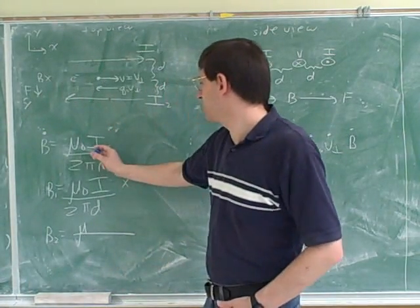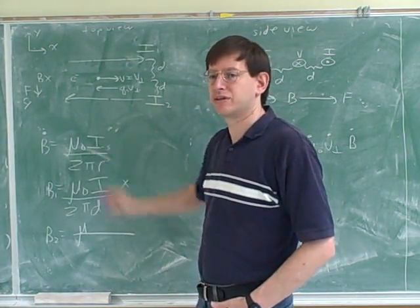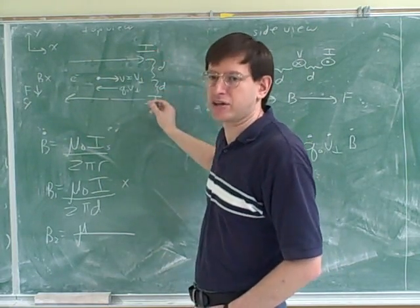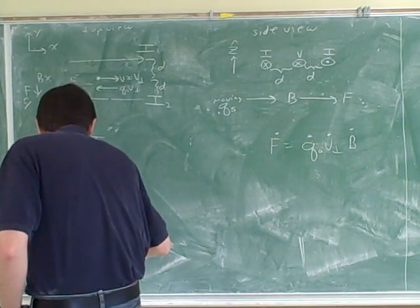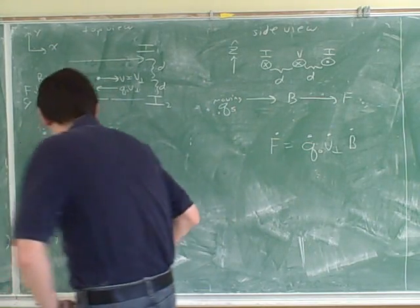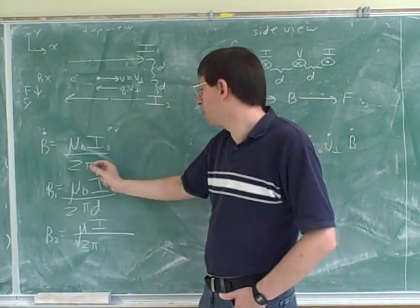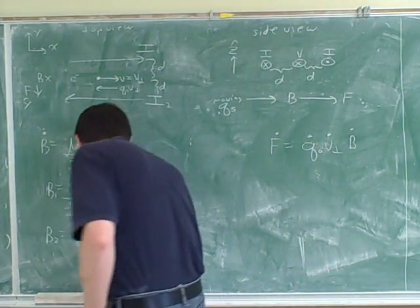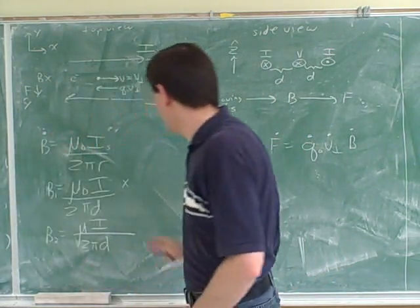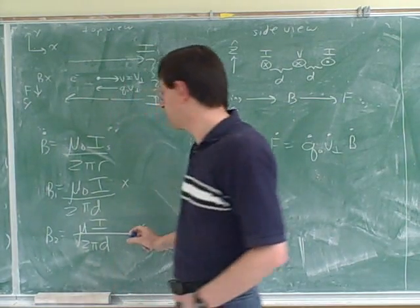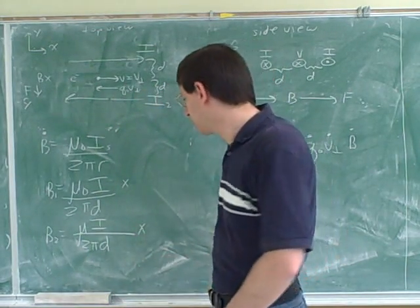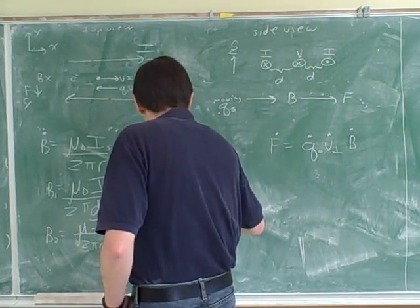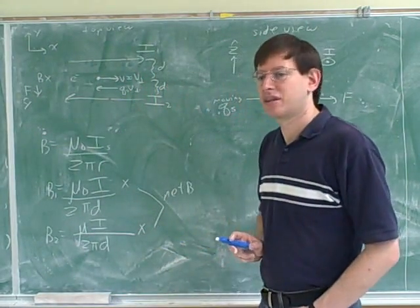Well, what symbol should I plug in for the source current for wire two? I. Yeah, because they told us that these both had a current of I. And what symbol should I plug in for R for wire two? D, because they told us this distance was the same. And we already figured out that this is also pointing into the board. Now, we have to figure out the net magnetic field.